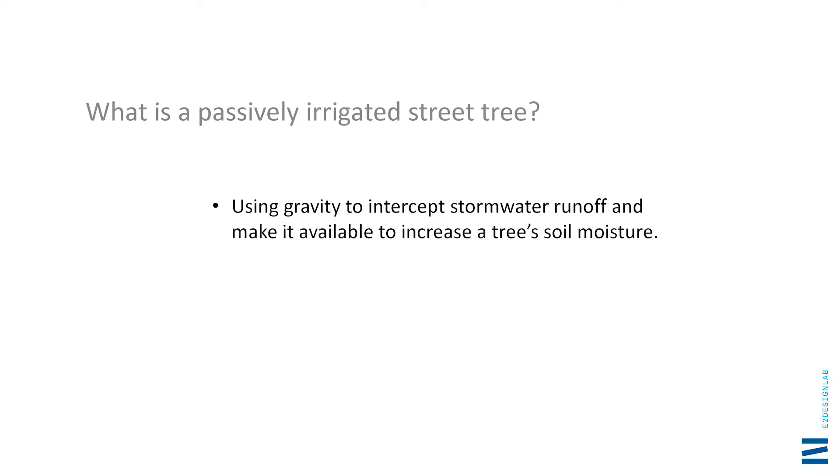A simple definition of what is a passively irrigated street tree — it's pretty much just getting the water there without using pumps or anything. I've heard passive irrigation applied also to where you go around and manually water trees but that's not what we're talking about — Chris has covered that.